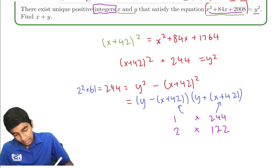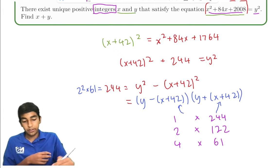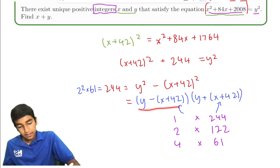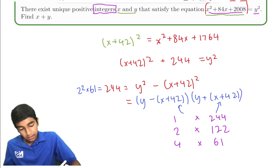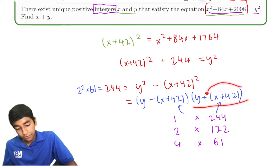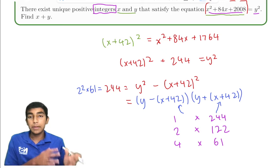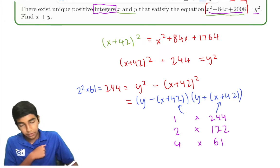4 × 61, and those are all the factors. And notice that this term right here is bigger than this, because the right term is y + x + 42, and the left term is y - x + 42. So the right term will always be bigger. So we cannot have the reverse truth.